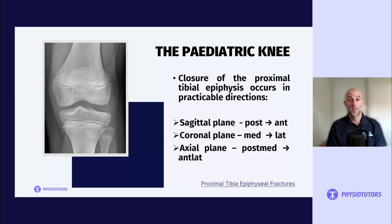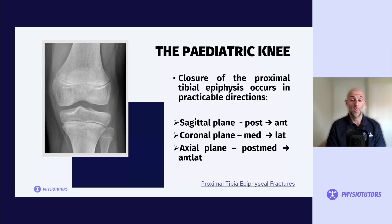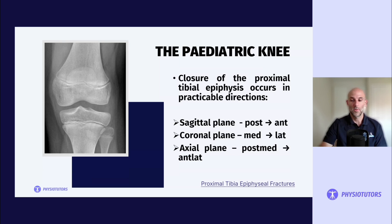The closure of the proximal tibial epiphysis occurs in specific directional patterns: in the sagittal plane, it closes from posterior to anterior; in the coronal plane, medial to lateral; and in the axial plane, from posterior-medial to anterior-lateral.